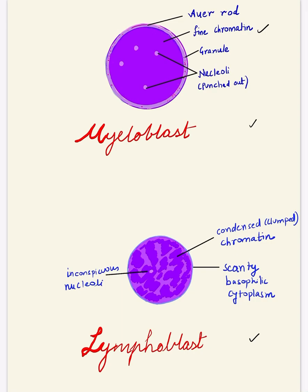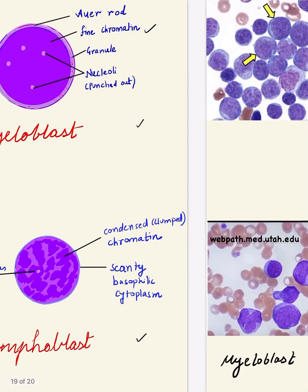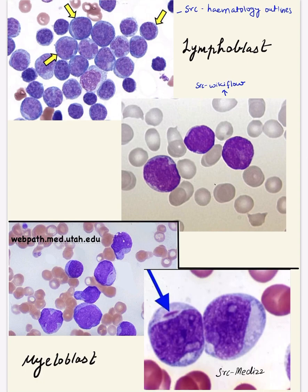Next, the lymphoblast. They are relatively smaller than a myeloblast and they have clumped chromatin — the chromatin is clumped at places, so it is coarse and clumped with a non-uniform appearance compared to the myeloblast. The cytoplasm is scanty and basophilic — just a thin rim of basophilic cytoplasm — and it is without any granules.